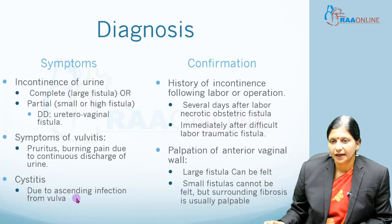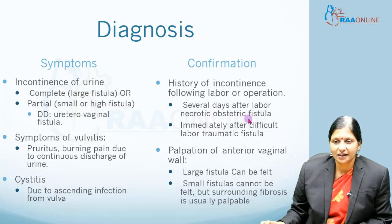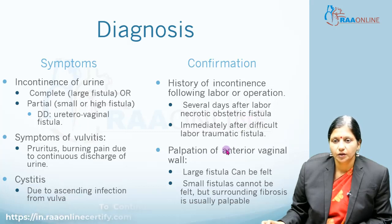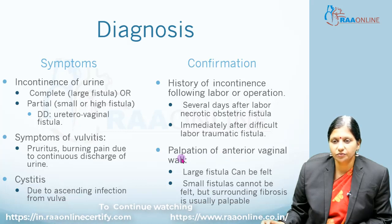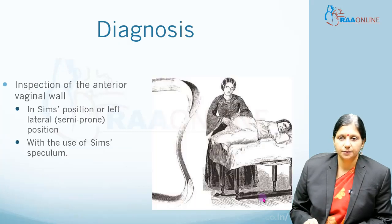To confirm the diagnosis, we take a history of difficult labor or instrumental delivery and ask when leakage started — whether immediately after labor or five to seven days later. On per vaginal examination we palpate for fistulas: large fistulas can be felt, small fistulas cannot be felt directly, but the surrounding fibrosis is usually palpable.